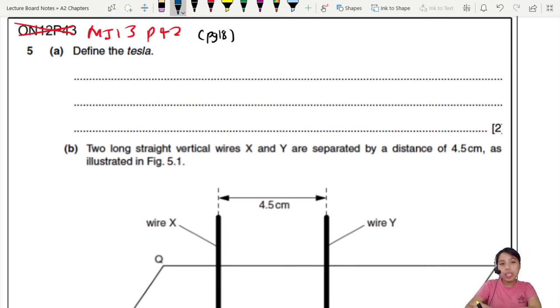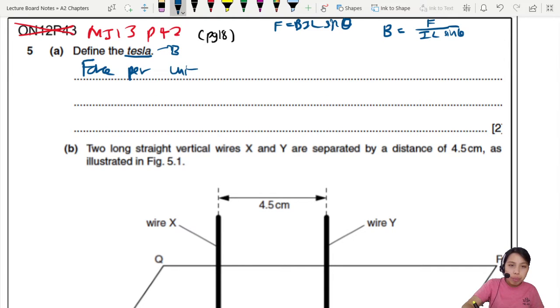Define the Tesla. It's a unit for the magnetic flux density B, also known as magnetic field strength. If you ever forget, maybe you can think of FBIL sine theta as the equation we always use to calculate. So that means B must be F over IL sine theta.